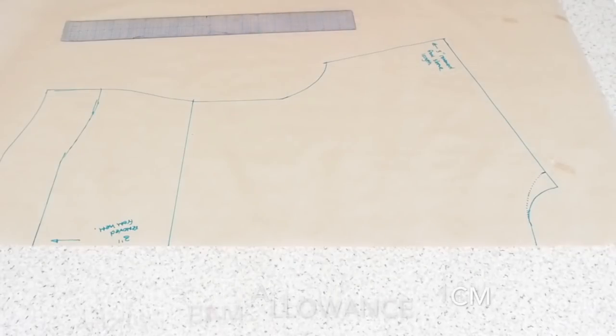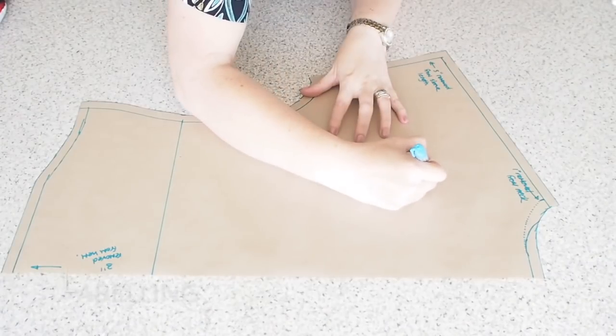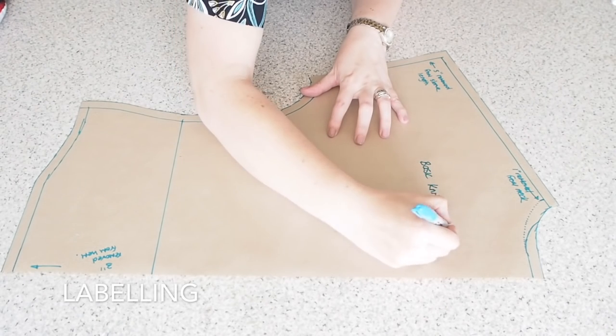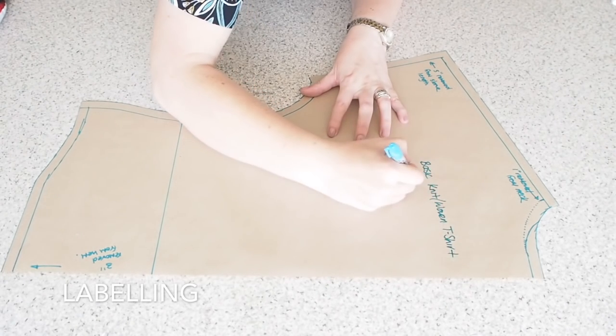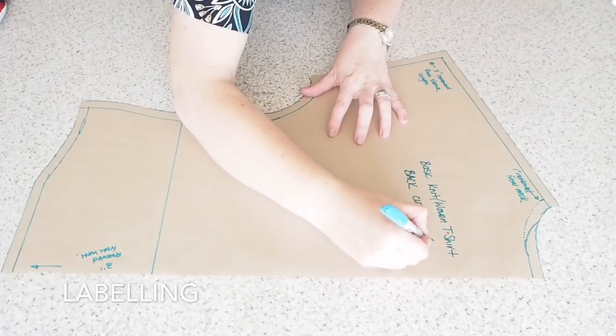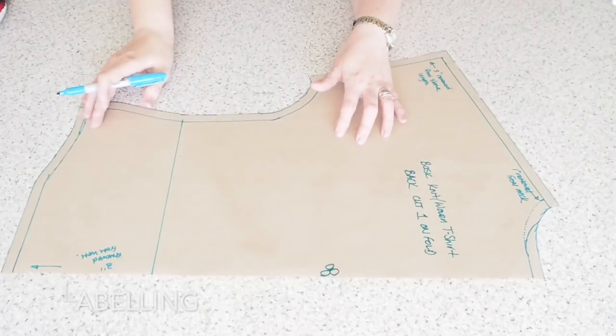Just adding a one centimeter seam allowance, the whole way around and labelling. So this pattern is for knit or woven. This is my back. I shall cut one on the fold.